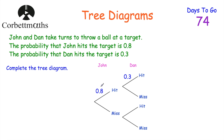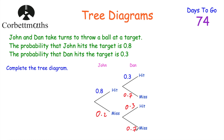The probability of John hitting is 0.8, so the probability that John misses would be 0.2, because these probabilities must add to 1 — he either hits it or misses it. For Dan, the probability that he hits is 0.3, so the probability that he misses is 0.7. The same applies to Dan's second branch: 0.3 to hit and 0.7 to miss. We've now labelled all the probabilities on the branches.